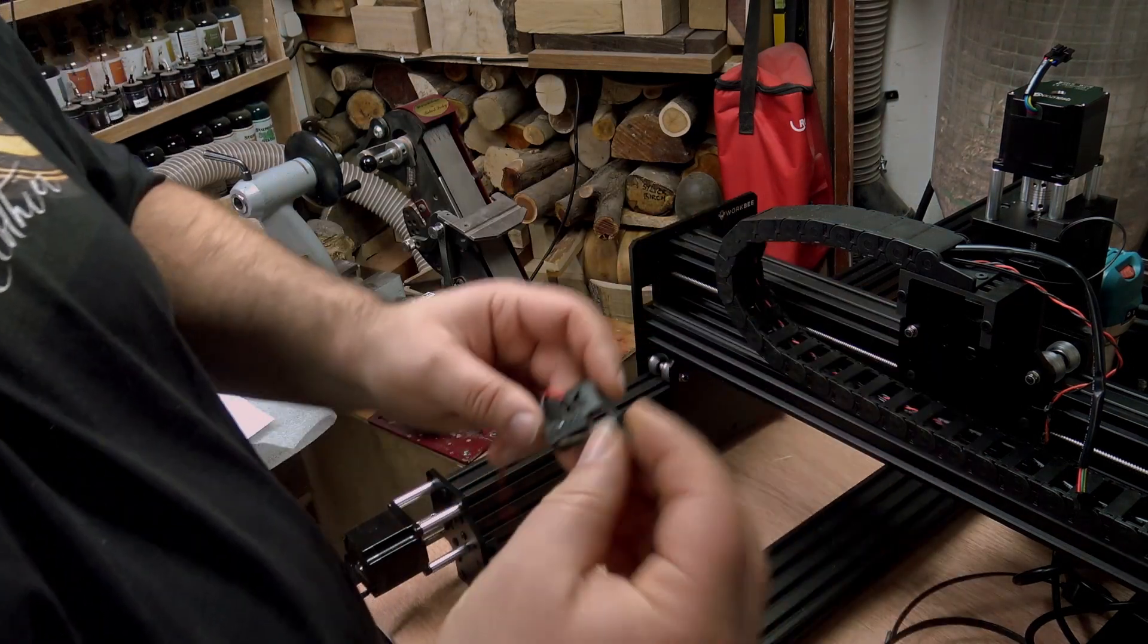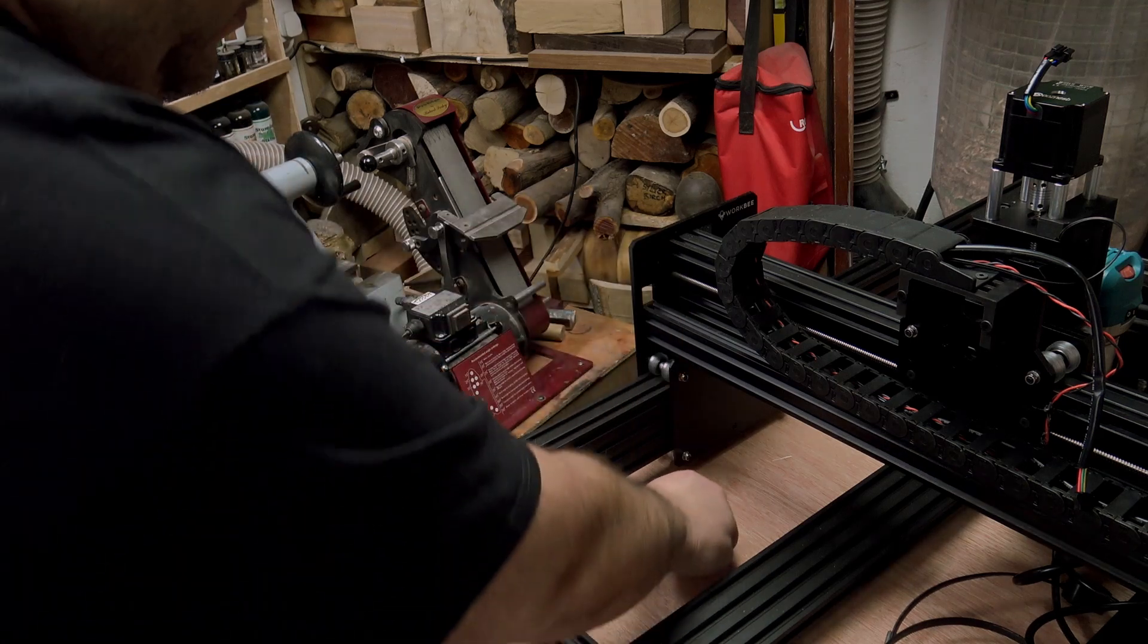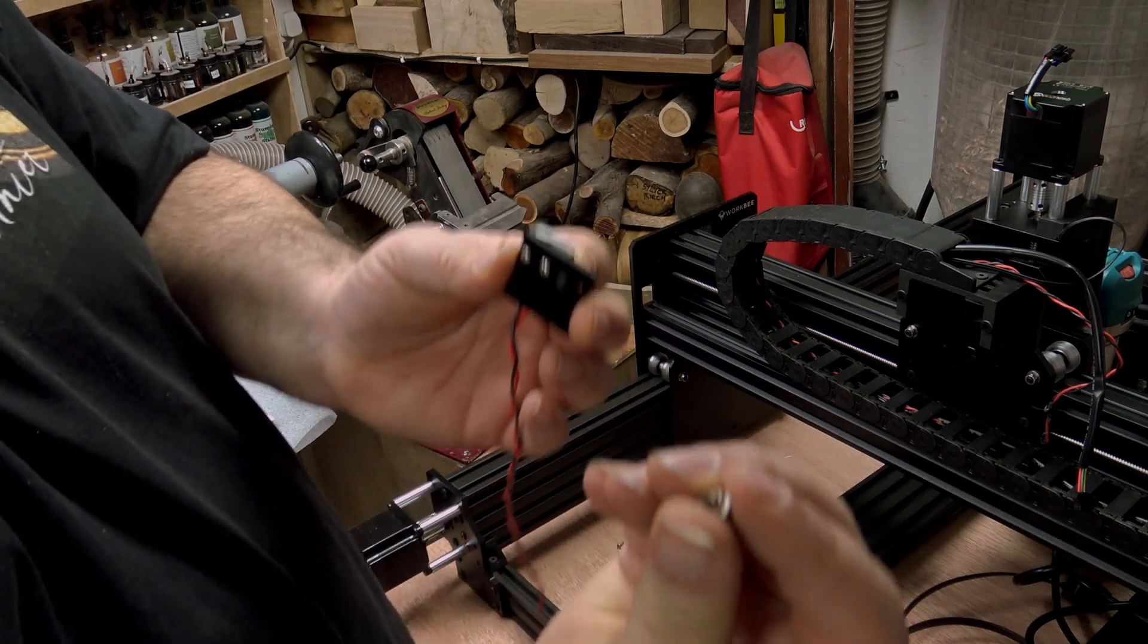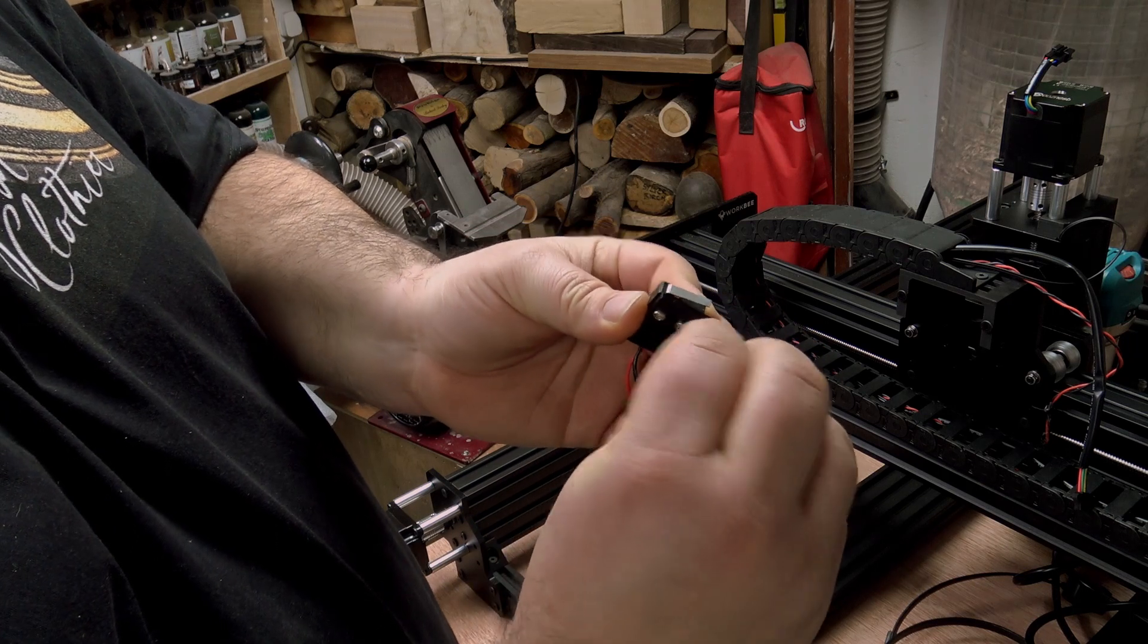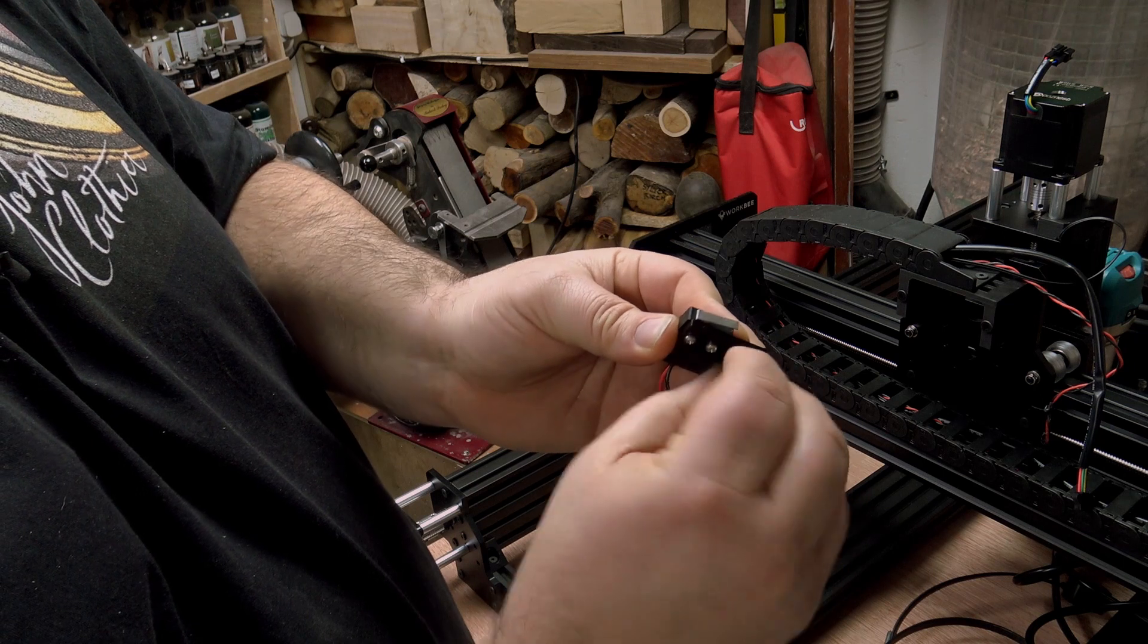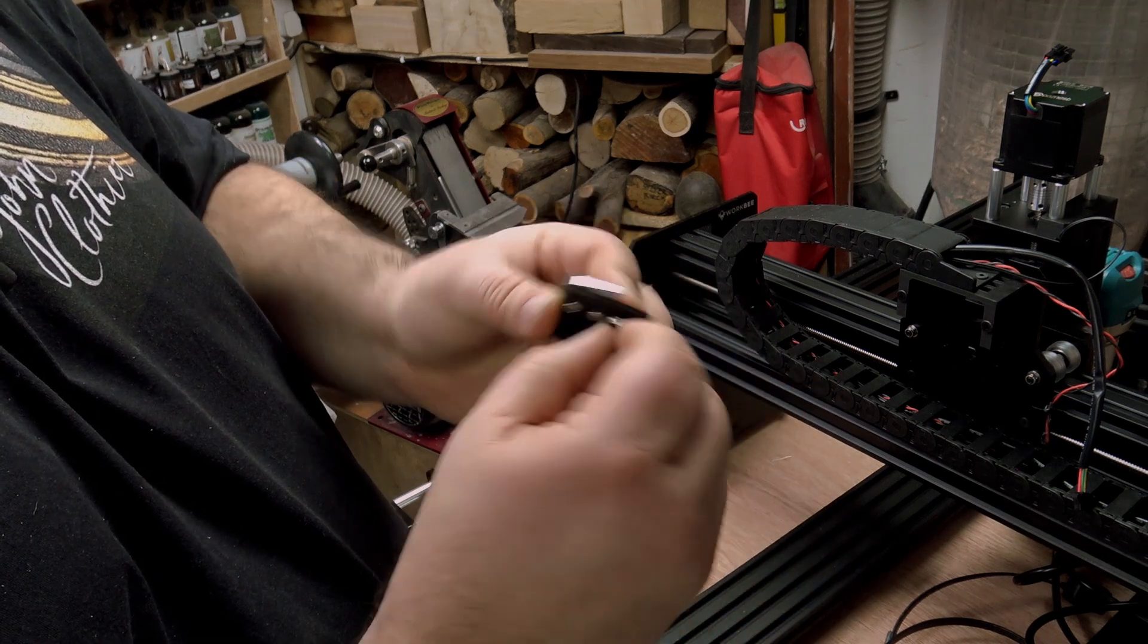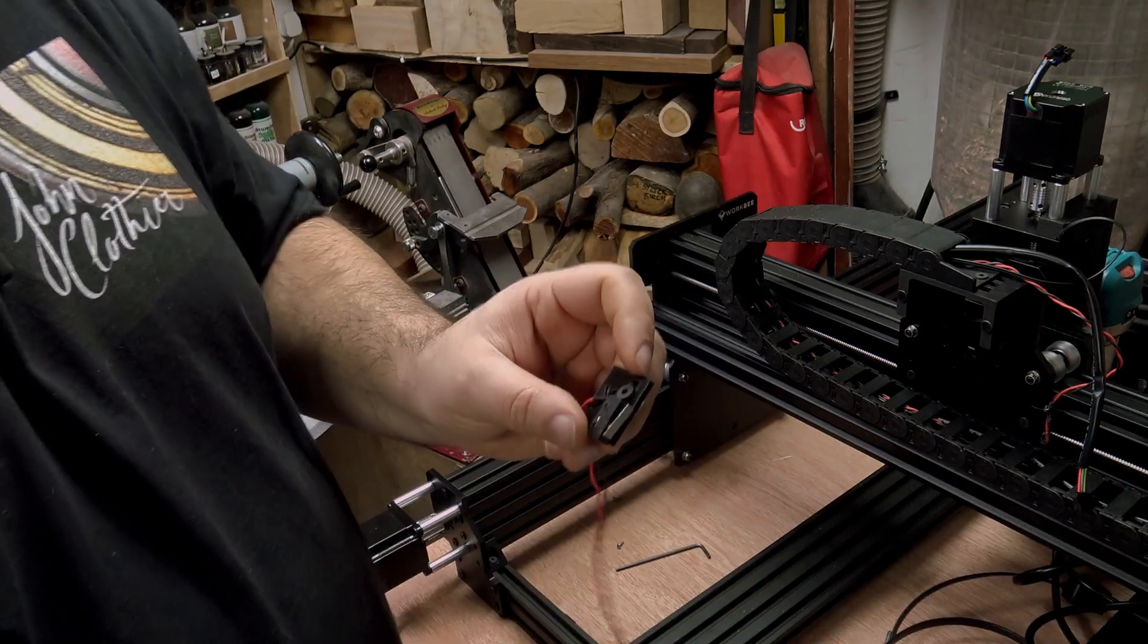Then I'm going to take one of the eight millimeter bolts and drop it in through the slot and on the back of that one of the little drop-in T-nuts, making sure that the grooves are towards the head of the bolt, and just put a turn or two on just to hold it in place.